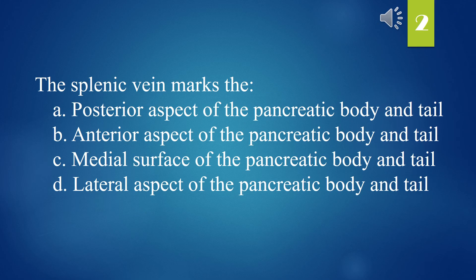The splenic vein marks the: A. Posterior aspect of the pancreatic body and tail. B. Anterior aspect of the pancreatic body and tail. C. Medial surface of the pancreatic body and tail. D. Lateral aspect of the pancreatic body and tail. The answer is A. Posterior aspect of the pancreatic body and tail.